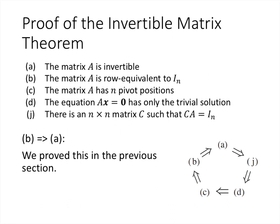Finally, we close the loop and prove that B implies A. Statement B says the matrix is row equivalent to the identity matrix. From the previous section on invertible matrices, that exactly tells us the matrix A is invertible. Because when we take the augmented matrix [A | I] and row reduce it to [I | ?], the second half gives us A inverse. That proof from the previous section proves that B implies A.